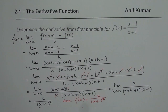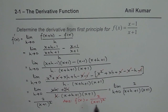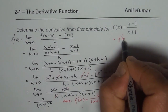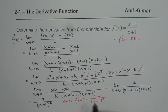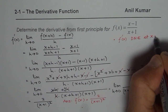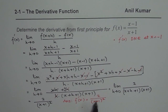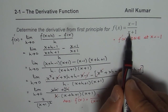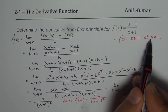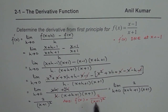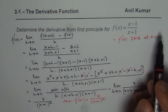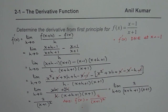From this general derivative we can conclude several things. First, f dash x does not exist at x equals minus 1, because substituting minus 1 gives 0 in the denominator. The original function is also not defined at minus 1, and it is not differentiable there. So both the function and its derivative do not have x equals minus 1 in their domain.